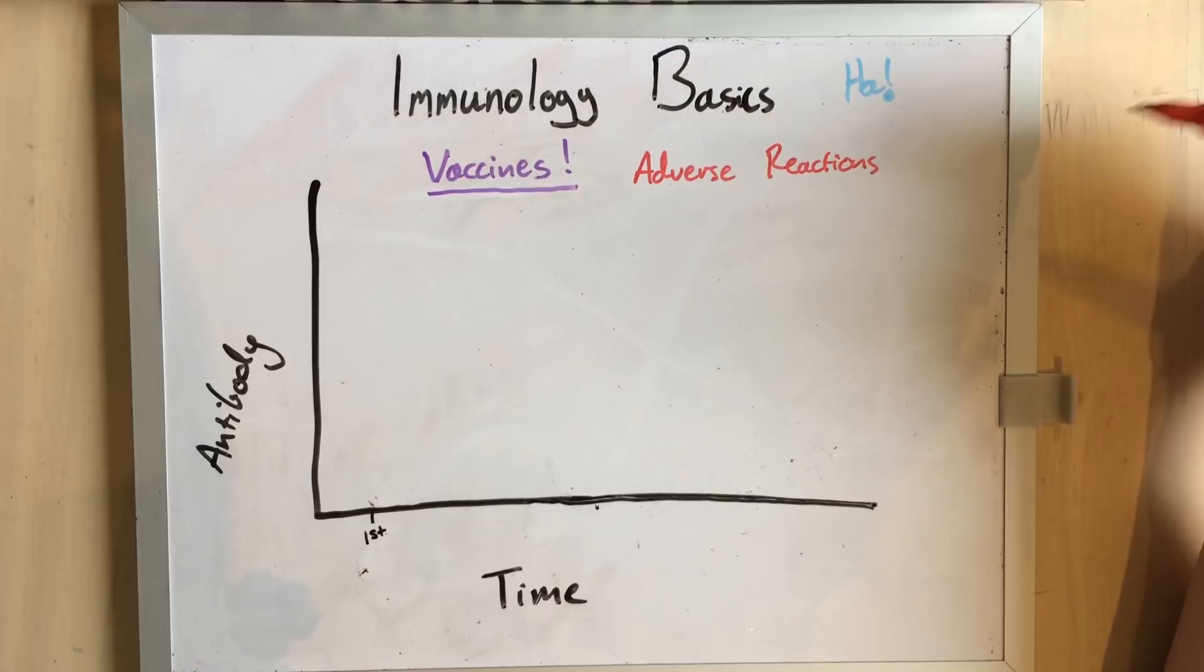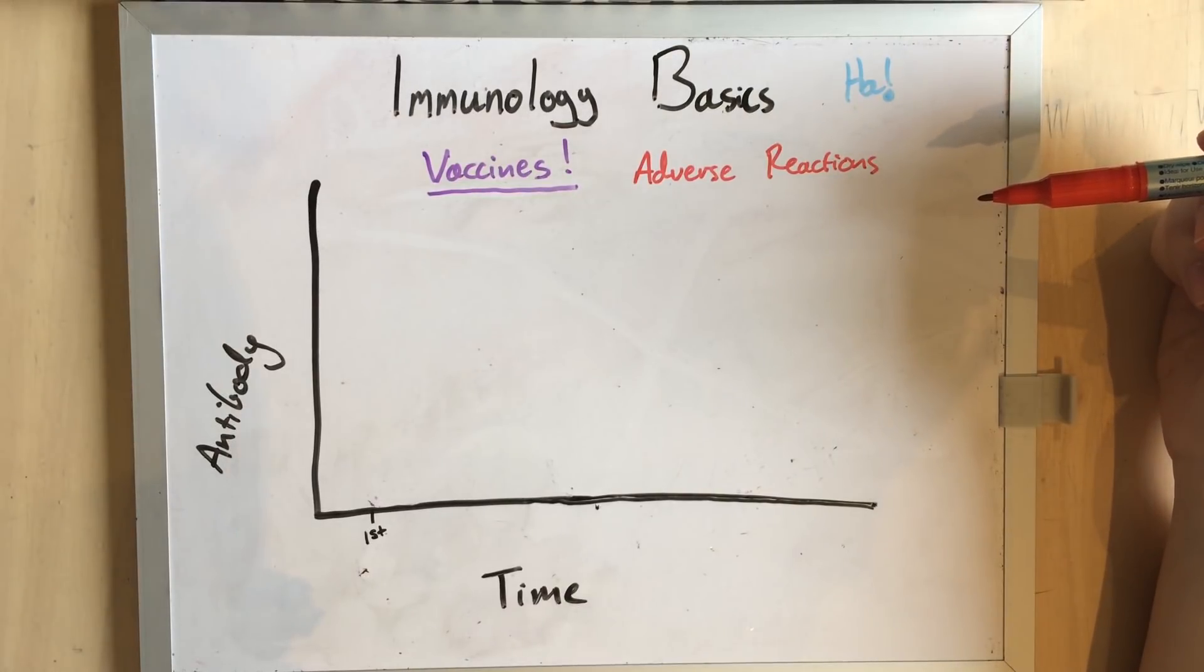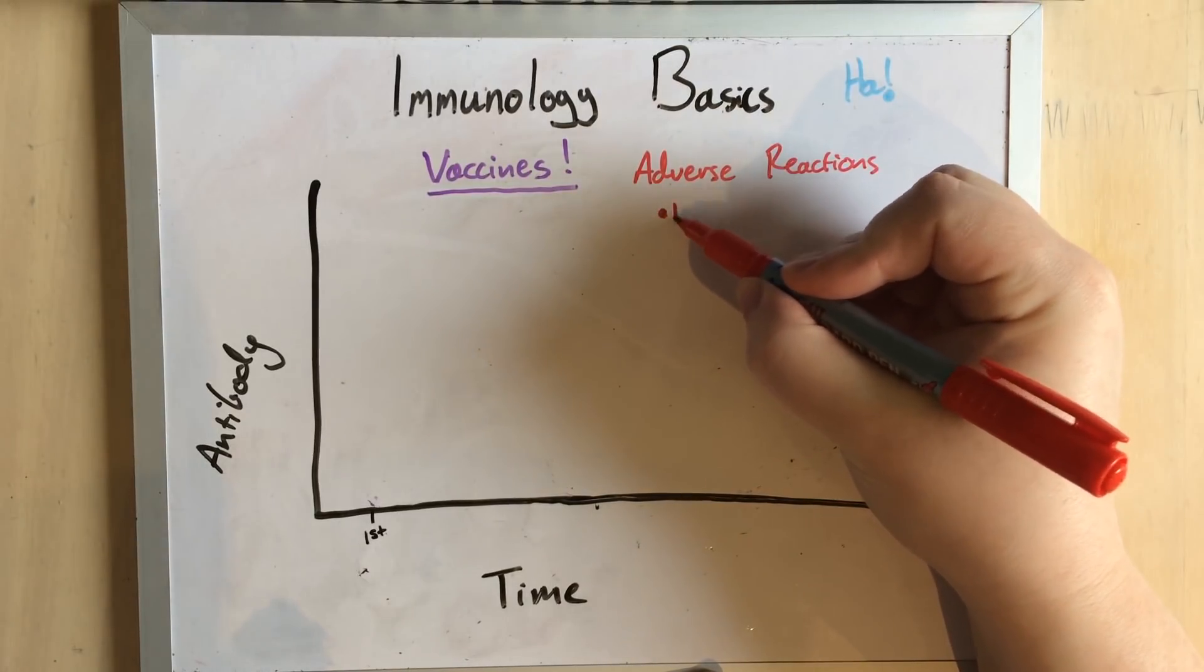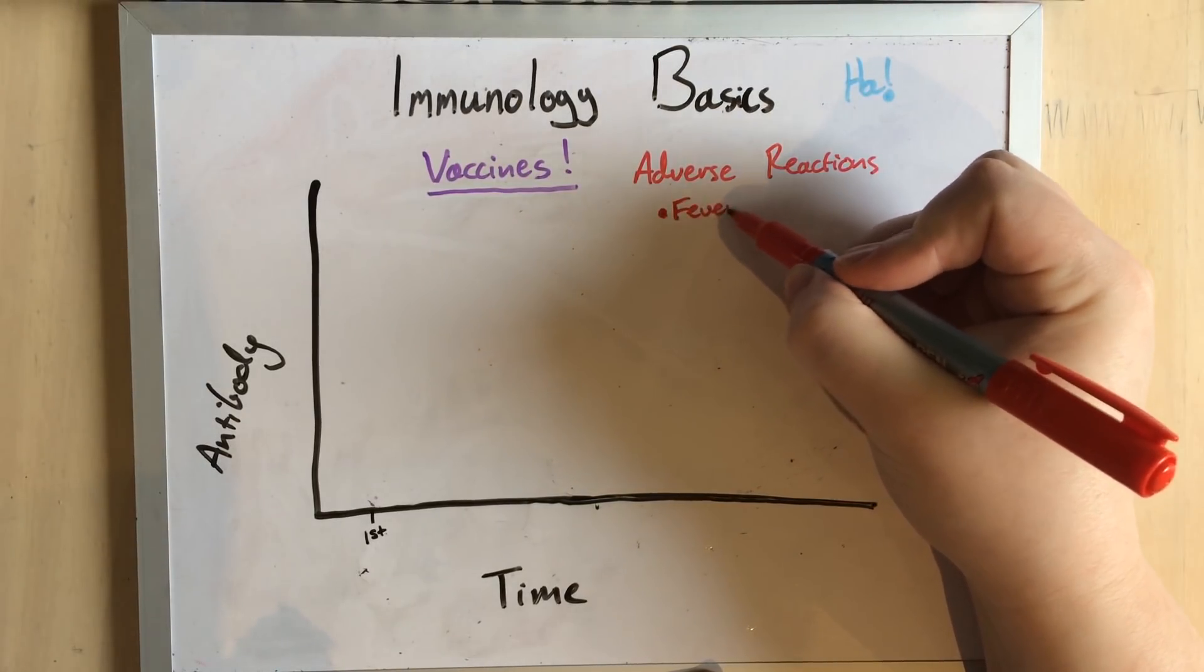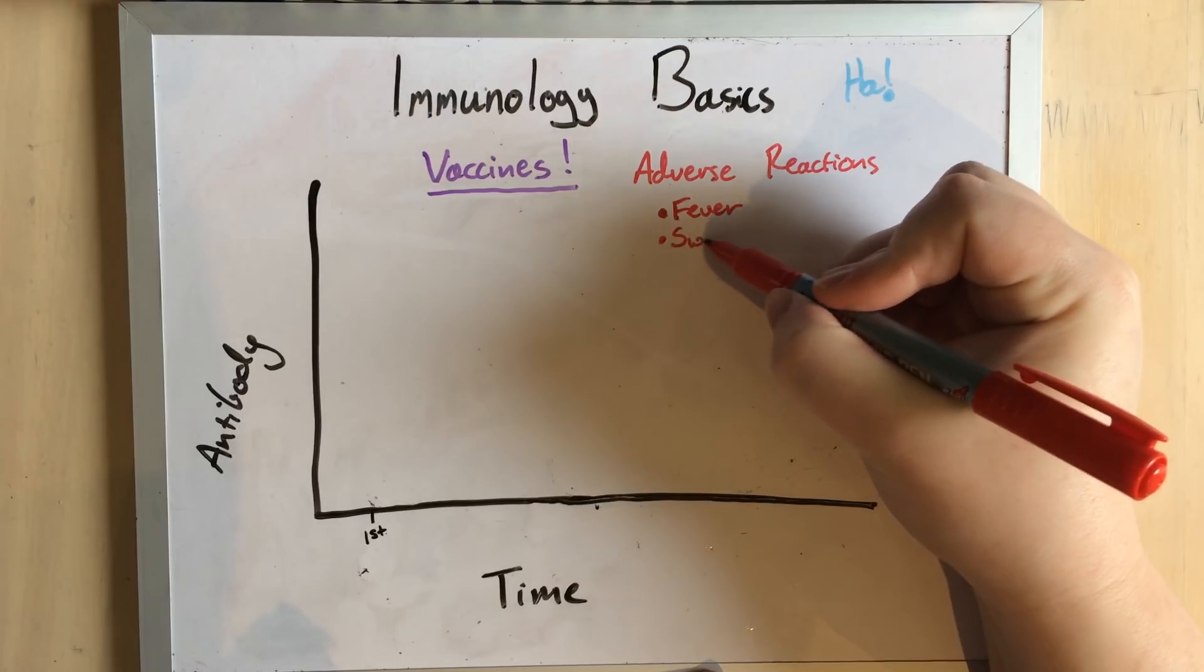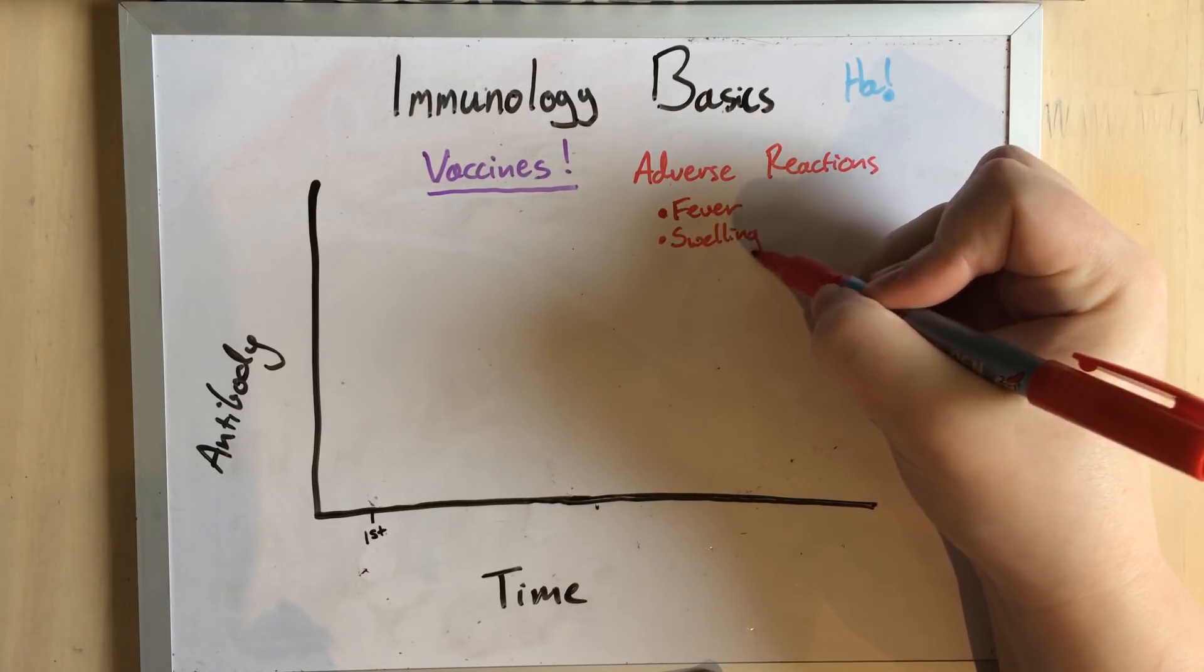So what are some of the adverse reactions from vaccines that everybody's going on about? Well, the most common ones are actually fever and swelling at the injection site anyway.